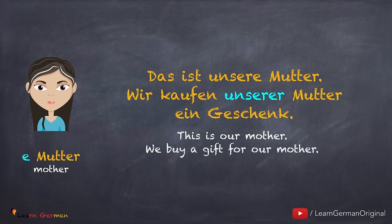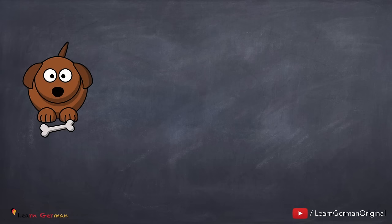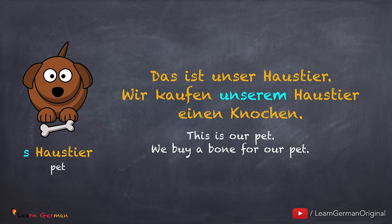Das ist unsere Mutter. Wir kaufen unserer Mutter ein Geschenk. Since 'Mutter' is feminine, the dative possessive article would be 'unserer'. Das ist unser Haustier. Wir kaufen unserem Haustier einen Knochen. The article for 'Haustier' is 'das', so in the dative object we would use 'unserem'.